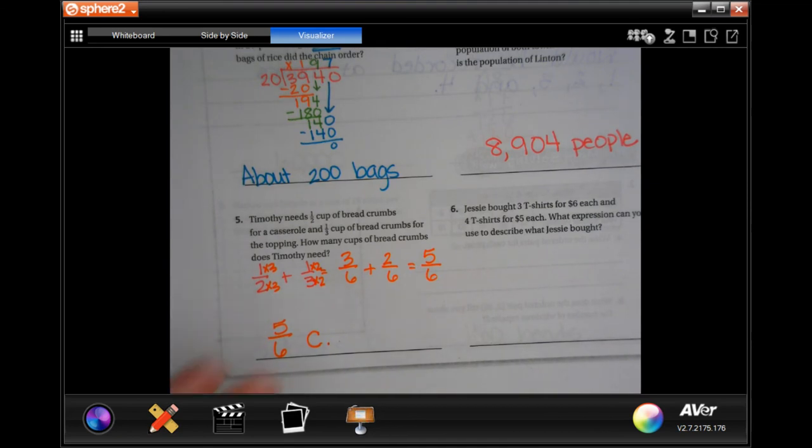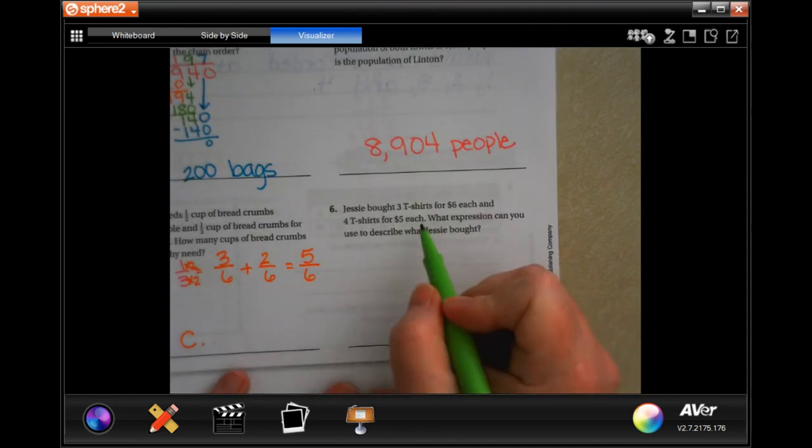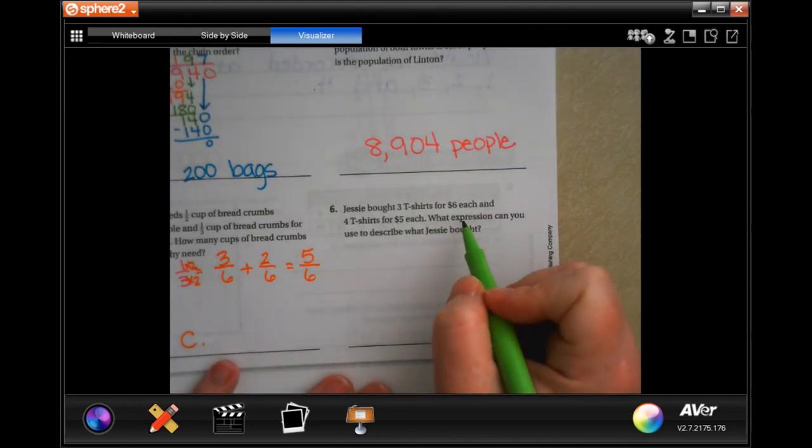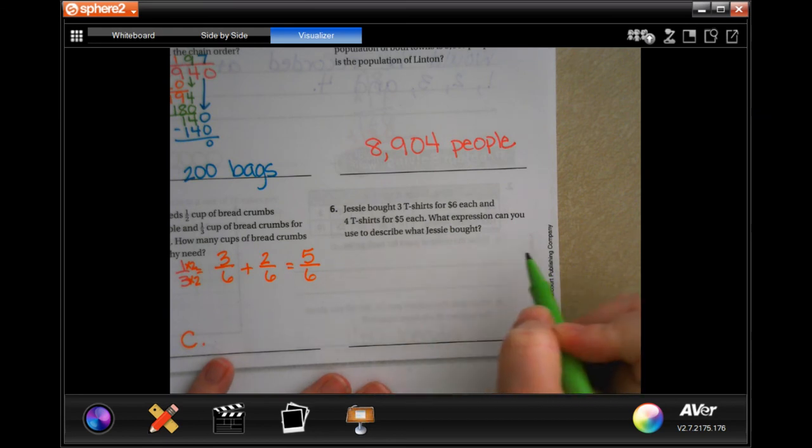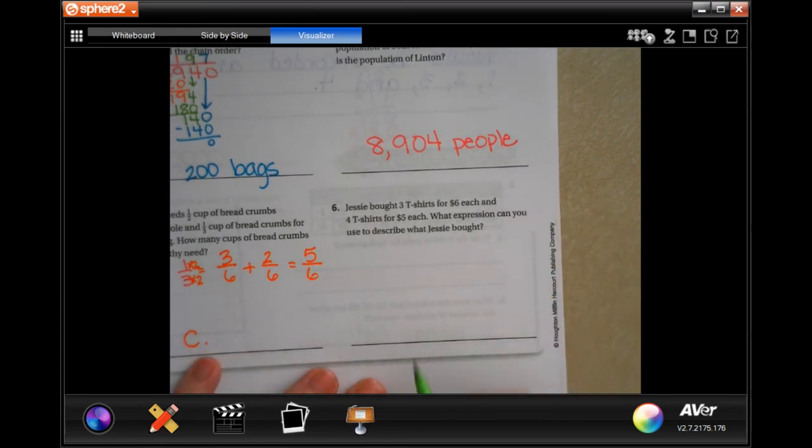All right, Jesse bought three t-shirts for six dollars each and four t-shirts for five dollars each. What expression can you use to describe what Jesse bought? She bought three t-shirts for six dollars and four t-shirts for five dollars. That's your expression guys, that's it, that easy. Thanks for hanging out for 9.3. Come on back for 9.4, see you soon.